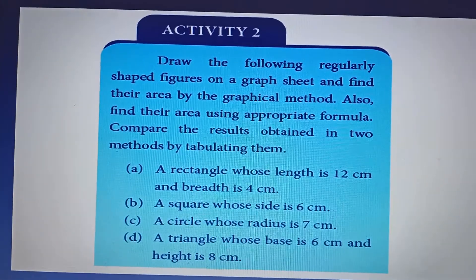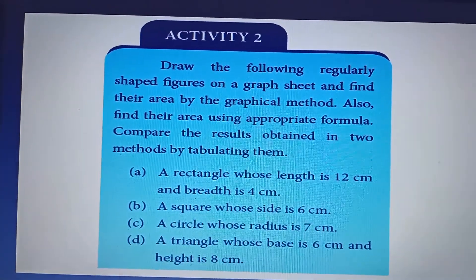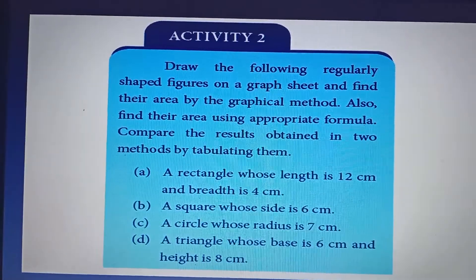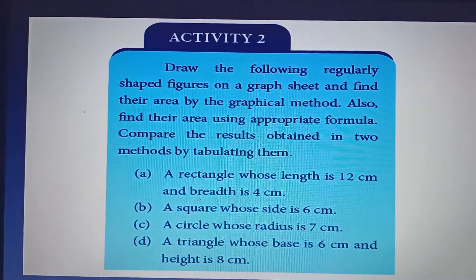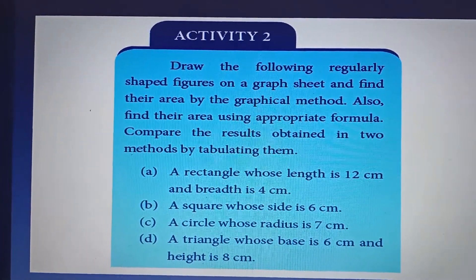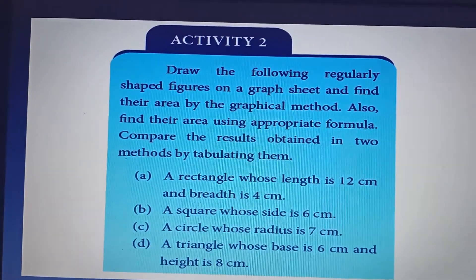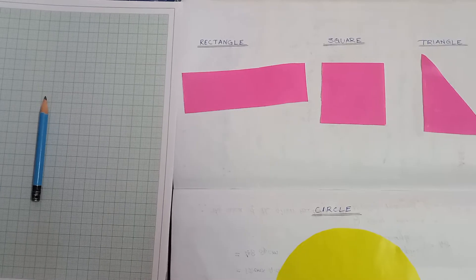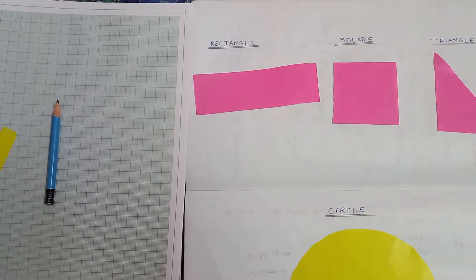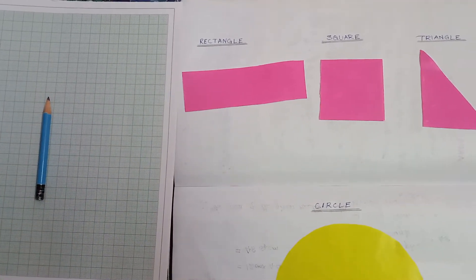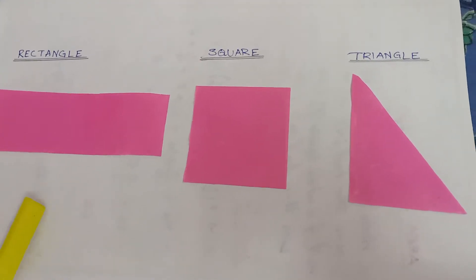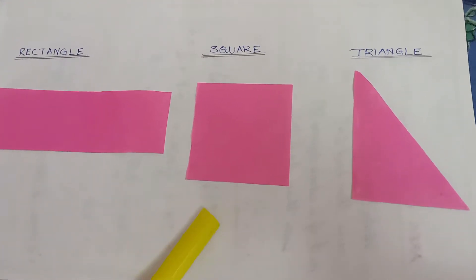Aim: To find out the area of regular objects like rectangle, square, circle, and triangle by using the formula and also by the graphical method. Materials required are graph paper, pencil, and regular shaped objects — rectangle, square, triangle, and circle.